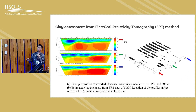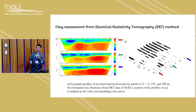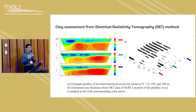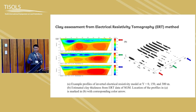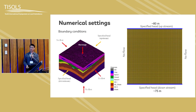We then combine with ERT — Electrical Resistivity Tomography. This method is used in profiles, and the colors mark the clay thickness. We can see the clay thickness distributions. Geophysical data has large uncertainties when assessing quantities — you need to set up a threshold to quantify the thickness. But even when we do that, we still have uncertainties, as we can see from the margins.